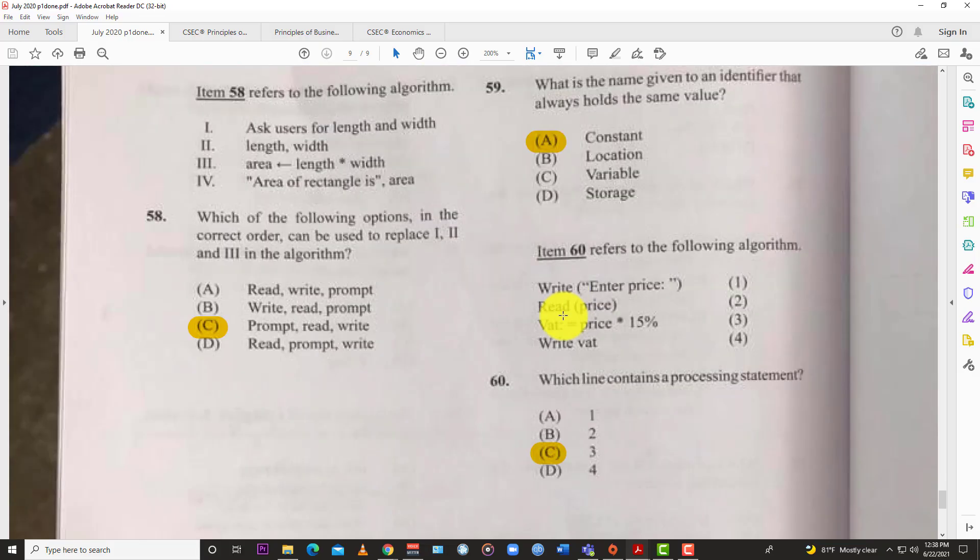Question 58 refers to the following algorithm. One asks the user for length and width. Two: length, width. Three: area equals length asterisk width. It's a little blurry. Four: area of rectangle is area. Which of the following options in the correct order can be used to replace one, two, and three in the algorithm? We have C: prompt, read, write.